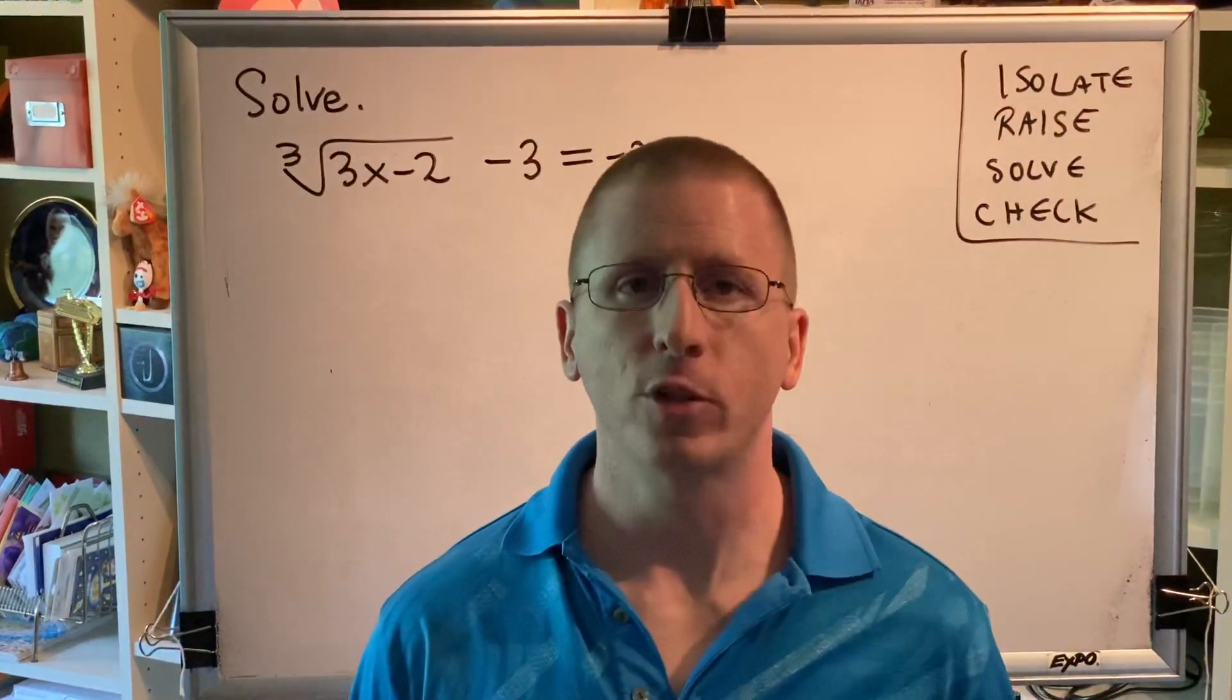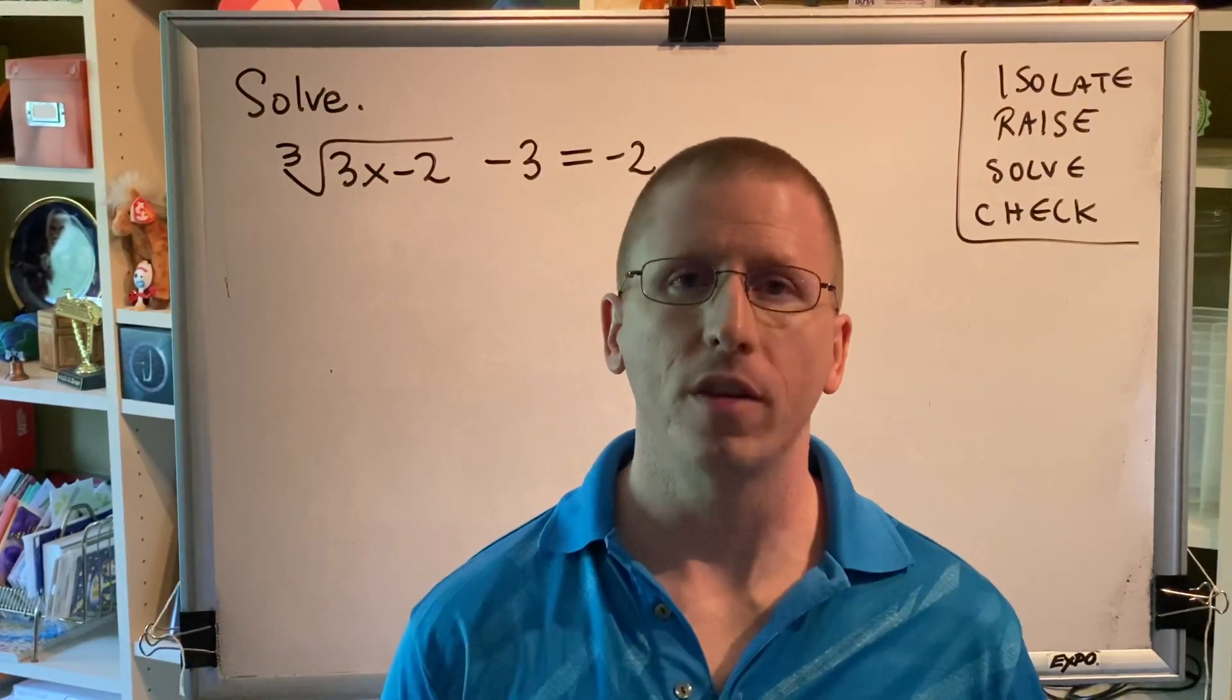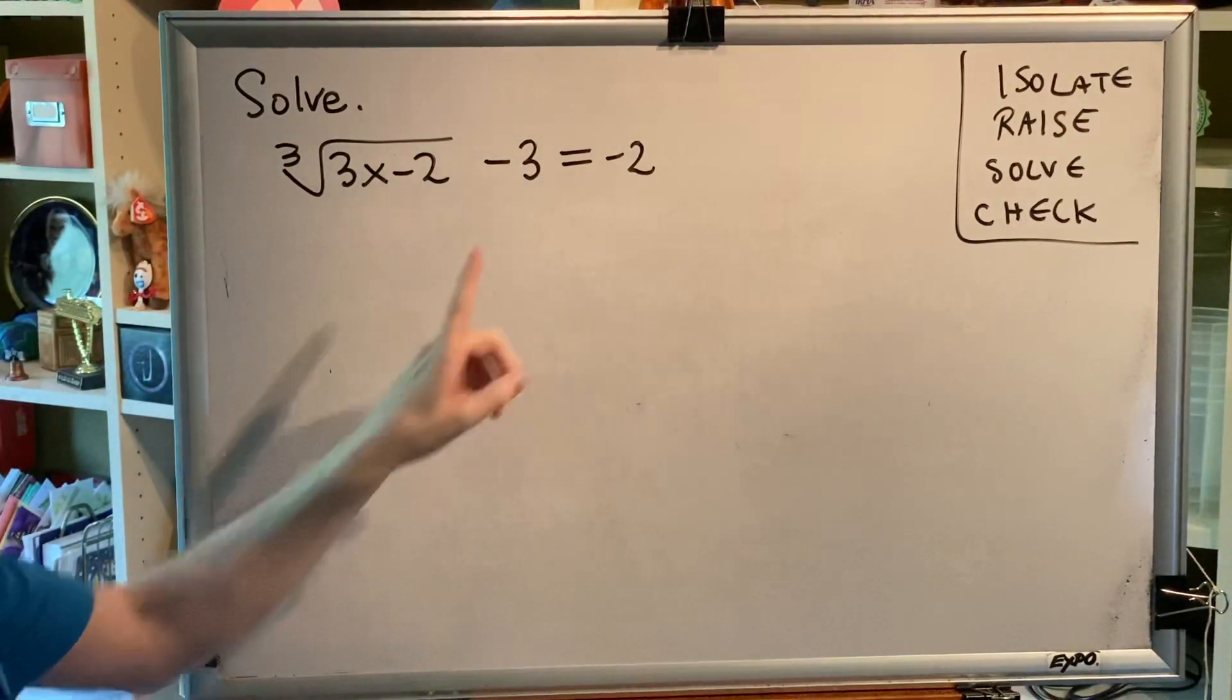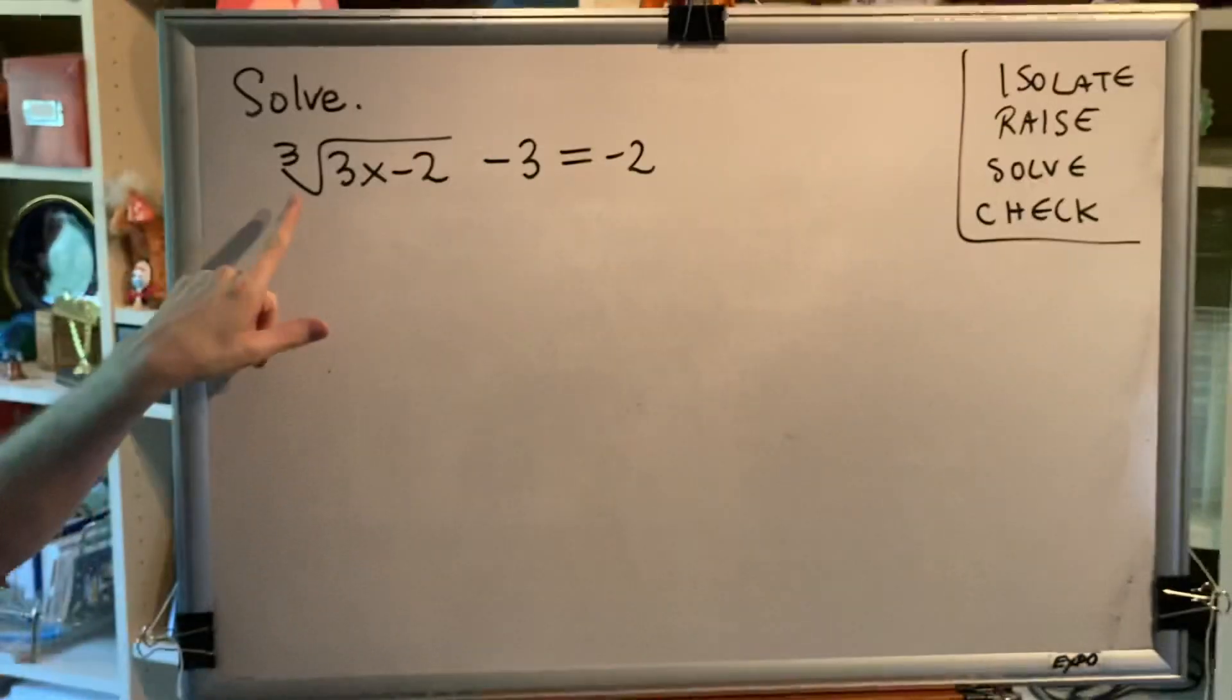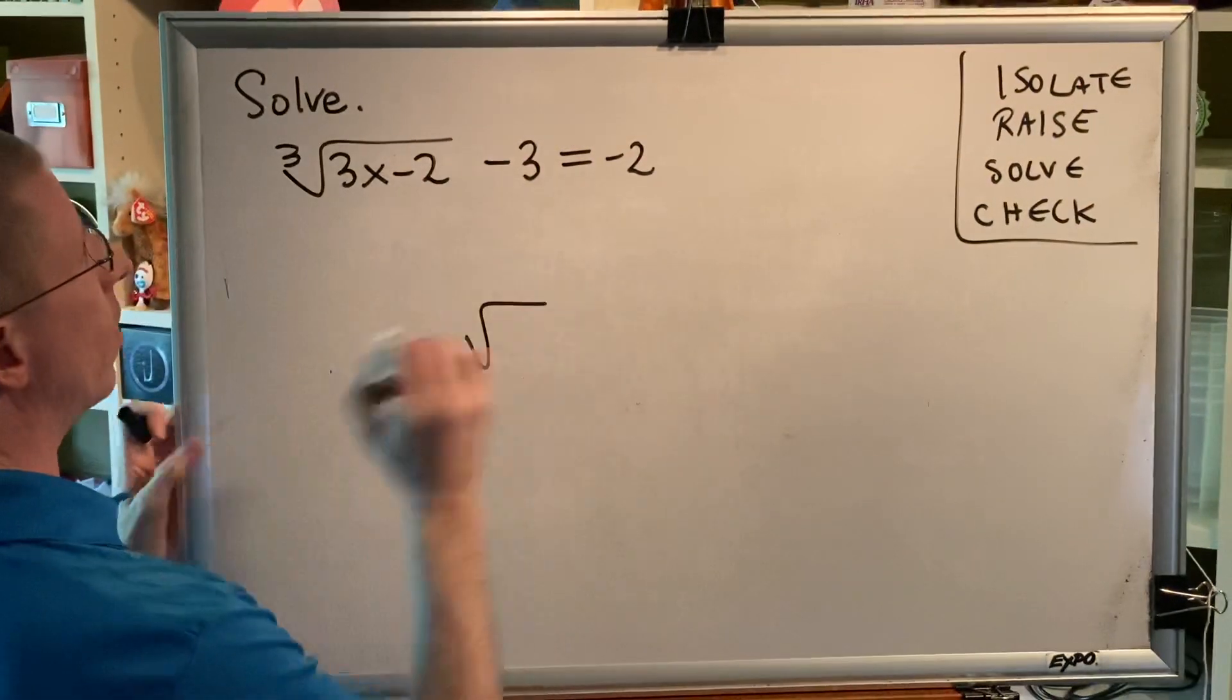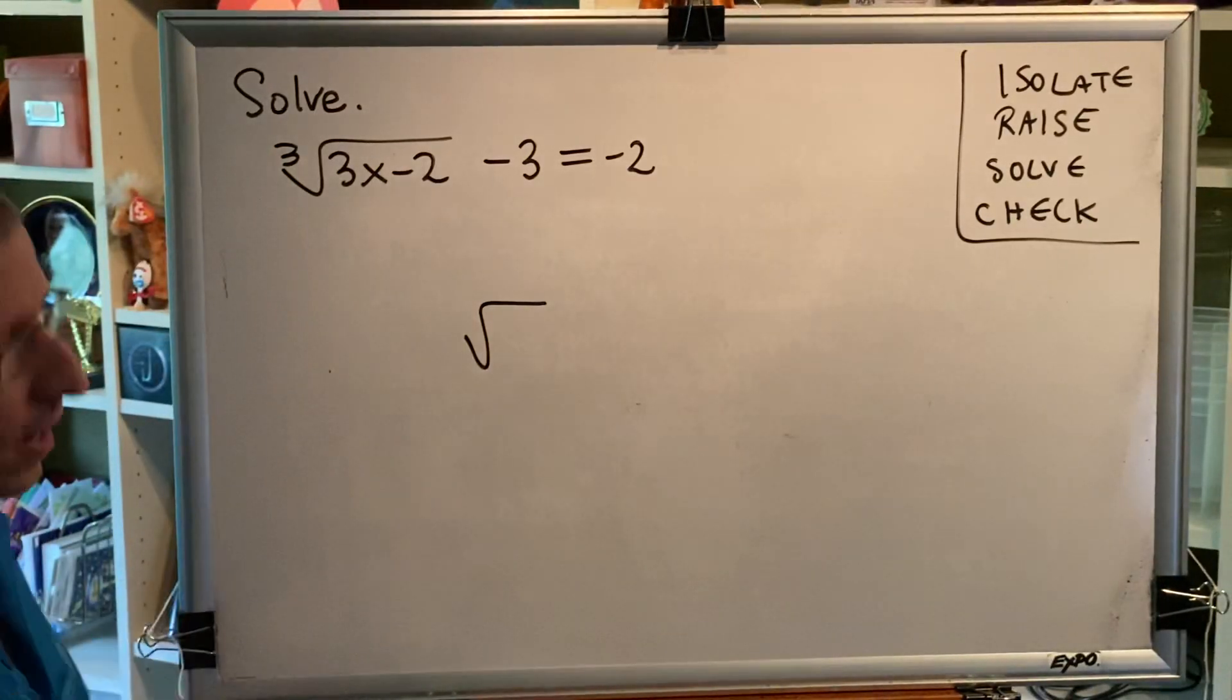One of the things that you want to work on as an algebra student is being able to look at a problem and recognize what are the steps needed to solve that problem. This is a radical equation. I know it's an equation because it contains equals, and I know it's a radical equation because it has this radical symbol. Our radical happens to be a cube root because of the index of 3.